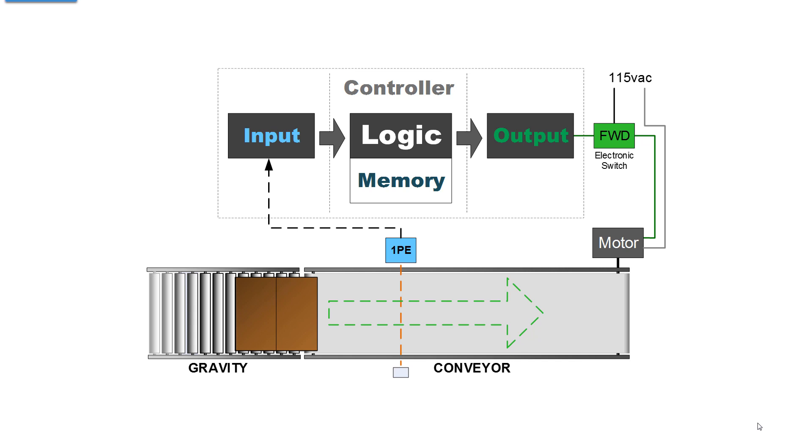The output of the controller operates electronic switch contacts, just like the push button, to run the conveyor until the optical path of the photo sensor is blocked. When the path is blocked, then the conveyor stops.